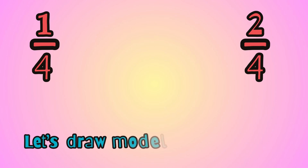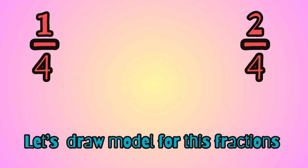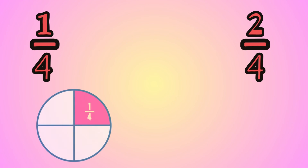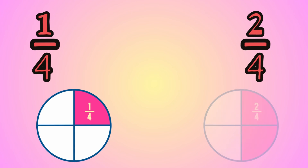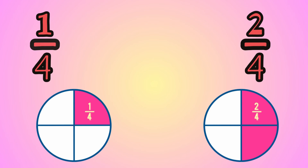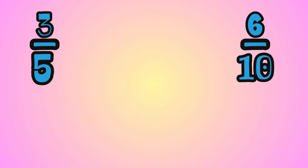Now we're going to draw models to represent these two fractions and to know if they are equivalent fractions. 1 fourth — 4 is my denominator, so I need to do 4 equal parts. And 1 is my numerator, so only one part will be shaded. This is my fraction to represent 1 fourth, and here we have the other fraction to represent 2 fourths. As you can see, these are not equivalent fractions because they don't take up the same amount in the fraction circle.